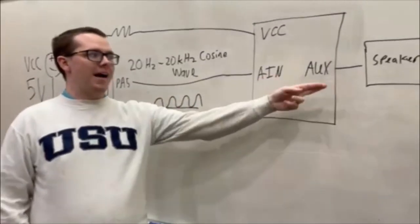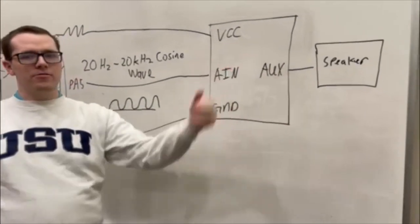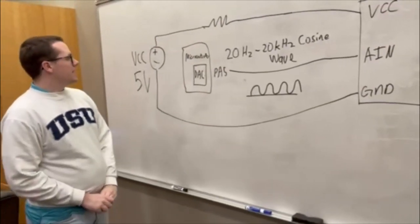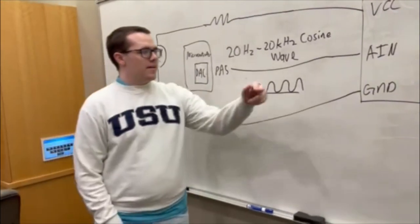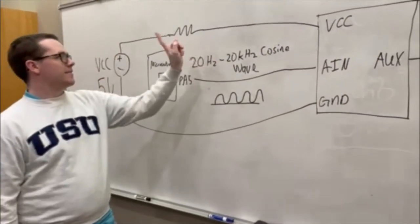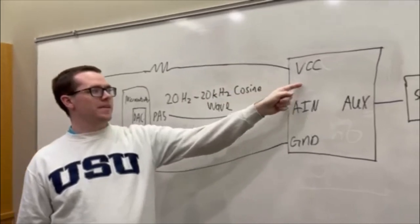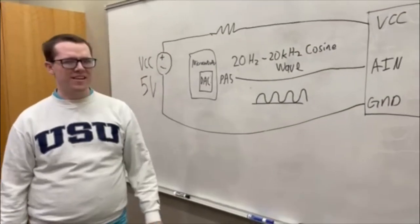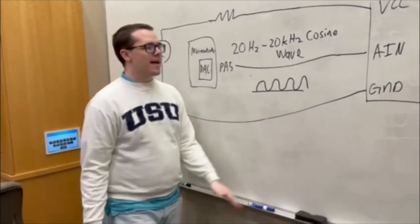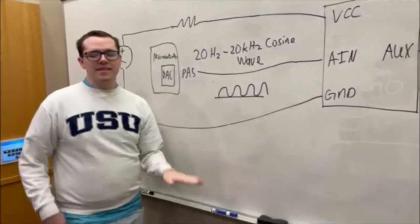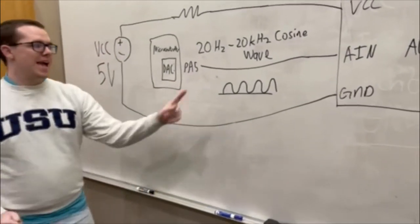Our PMOD outputs to the speaker through the AUX port. The PMOD has resistors connecting to VCC to avoid any current being overdrawn, is properly grounded, and amplifies this cosine wave for the speaker.